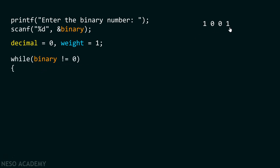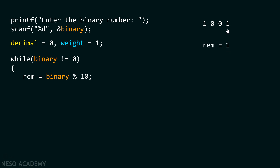That means this number should not be equal to 0. We need a logic in which we can multiply each bit by its weight and then add them together. We try to extract the last bit from this number and multiply by its corresponding weight. To do this, we divide the number by 10 and get the remainder instead of the quotient. If we divide any number by 10, the remainder is always the last digit of that number. So we divide binary by 10 and store the remainder inside the rem variable using the mod operator. Now rem will contain value 1, which is the last digit of this number.